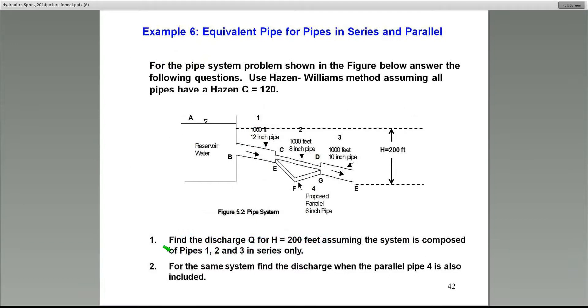So in this case, what I've done is I've taken the liberty of setting up a problem for you. In the first case, number one, the head drop from the reservoir point A to point E here. That's a free open surface. It's basically a free surface or atmospheric pressure there. At that point, the total drop is 200 feet. And the system is composed of pipes one and two and three. And for the same system, find the discharge when the parallel pipe four is added on. So I'm going to calculate the discharge in this pipe that's coming out of the reservoir into this pipe for these two scenarios or two cases.